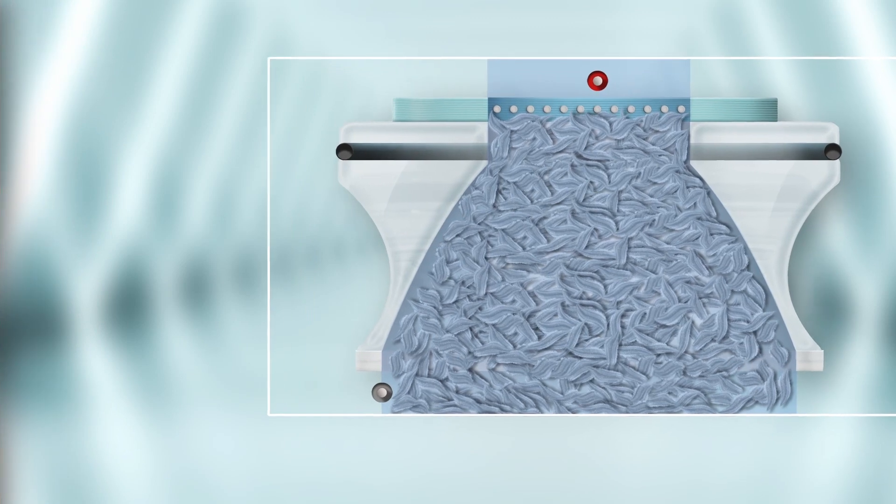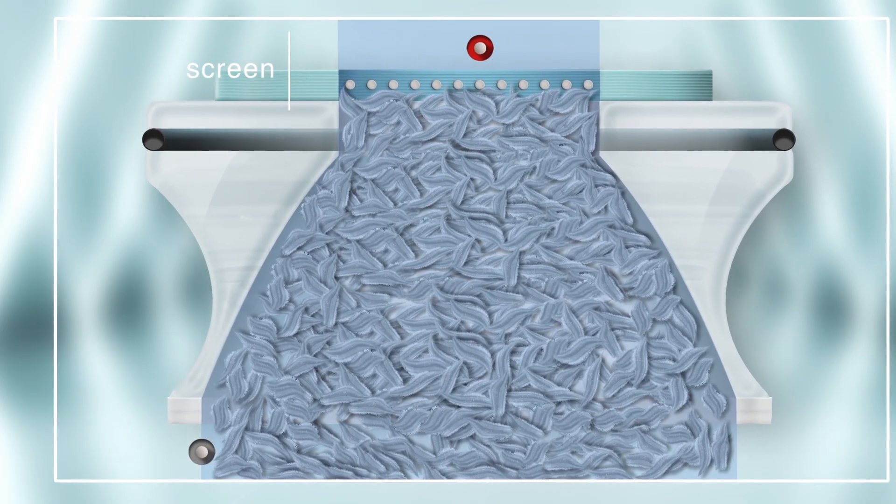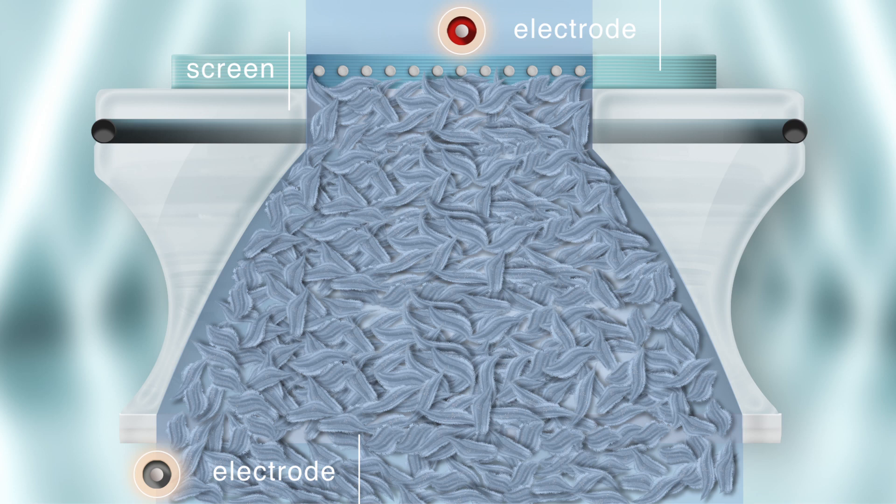Here, the sample fibers will be collected on a screen where they form a fiber plug. Two electrodes are installed in the cell to measure the streaming potential. The upper electrode is flooded by the filtrate of the sample suspension.